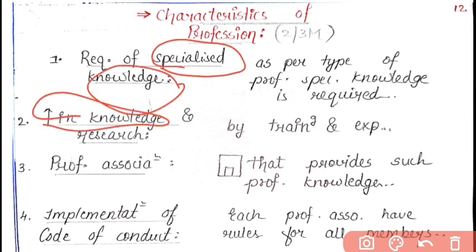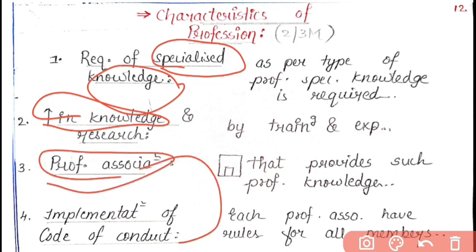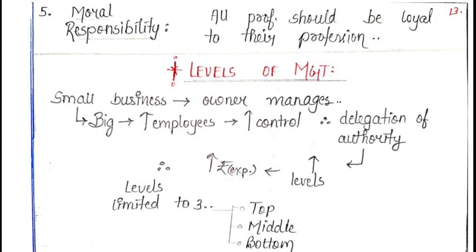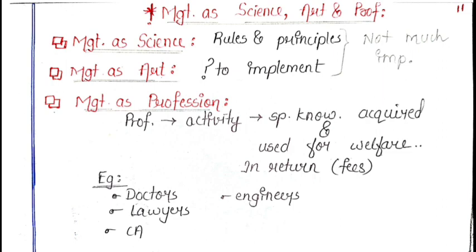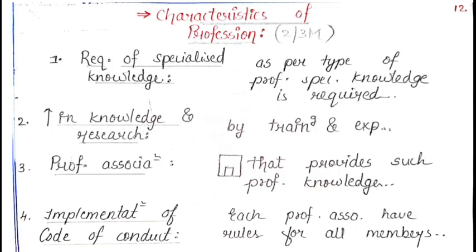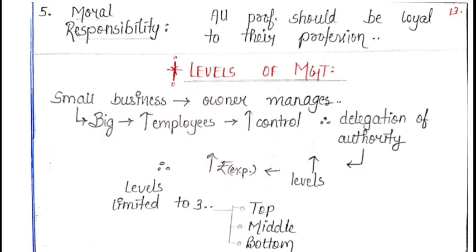This was all about characteristics of profession and management as science, art, and profession. The next topic is levels of management. In games there are many levels, but in management let's see how management works and how many levels of management there are.